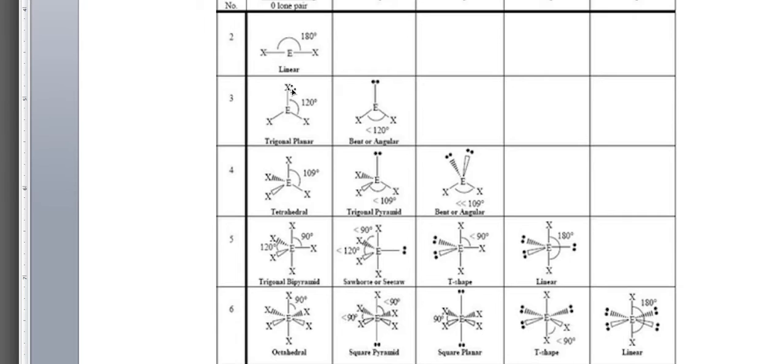Notice that whenever you have a lone pair present, it decreases the bond angle. For instance in this trigonal planar, when there's no lone pairs the molecular geometry would also be trigonal planar, but when we add a lone pair the bond angle that used to be 120 degrees now gets decreased on the side opposing the lone pair.